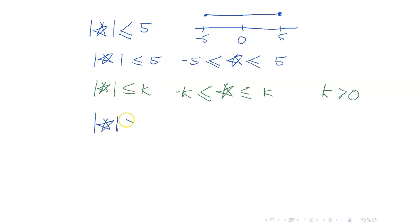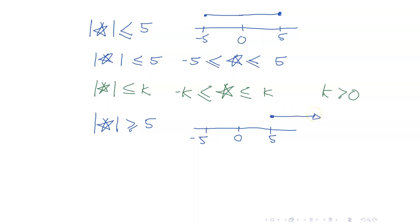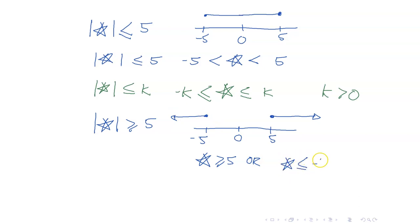What about if you turn this into greater than or equal to? Suppose we want the absolute value of ★ to be greater than or equal to 5. Where are the numbers whose distance from 0 is greater than 5? It would be these numbers here and these numbers on this side. This means that ★ is greater than or equal to 5, or for this other part, ★ is less than or equal to negative 5.